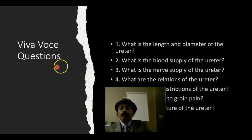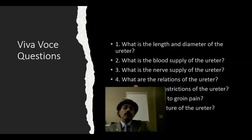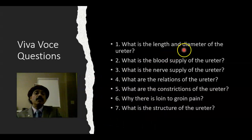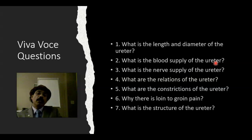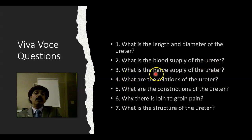Review questions: What is the length and diameter of the ureter? The length is about 25 centimeters and the diameter is 3 to 5 millimeters. The diameter is narrowest where it passes obliquely in the detrusor muscle of the urinary bladder wall. What is the blood supply of the ureter? There are many: from the renal artery, the abdominal aorta, the gonadal artery, the common or external iliac artery, branches of the internal iliac artery such as the vesical arteries, the middle rectal artery, and the uterine artery or vaginal artery in females.